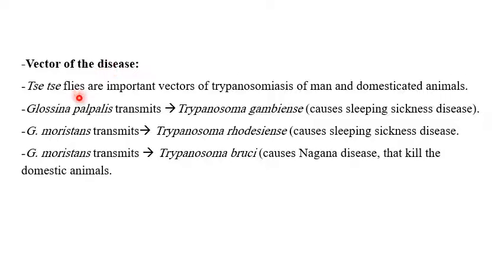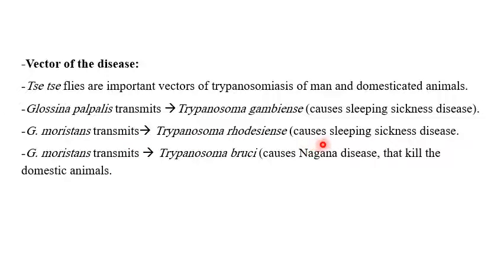Tsetse flies are important vectors of trypanosomiases of men and domesticated animals. Glossina palpalis transmits Trypanosoma gambiense, which causes sleeping sickness disease. Glossina palpalis also transmits Trypanosoma rhodesiense, which causes sleeping sickness disease. Glossina palpalis transmits Trypanosoma brucei, which causes nagana disease that kills domestic animals.